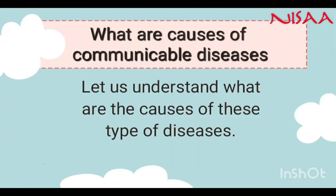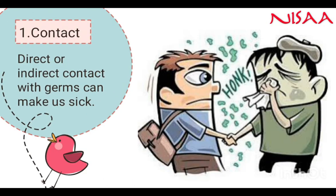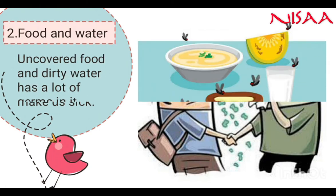Let us understand what causes the spread of communicable diseases. Number 1: Contact. Direct contact and indirect contact, such as sharing of things, shaking hands, staying too close to each other, etc., passes the germs from a sick person to a healthy person.